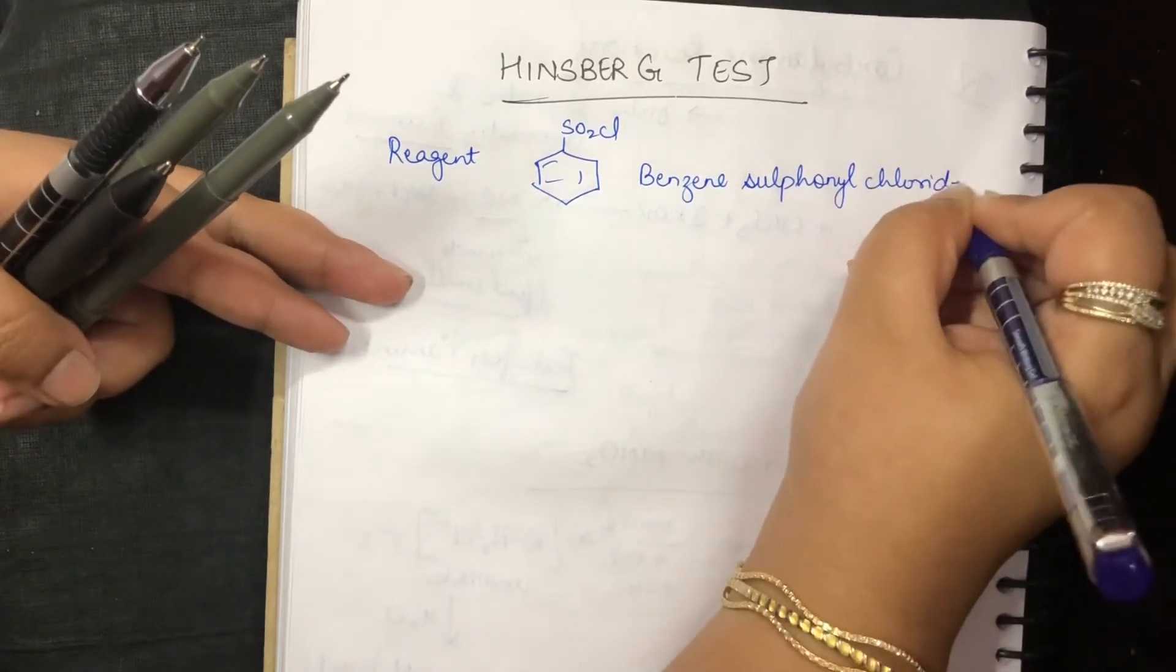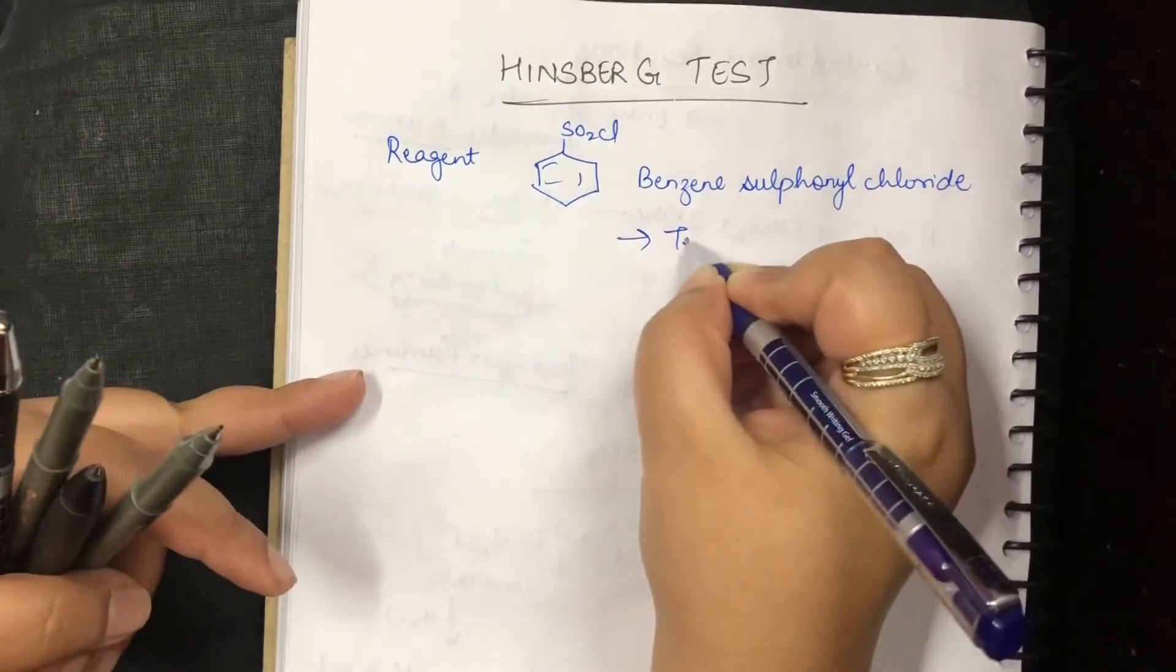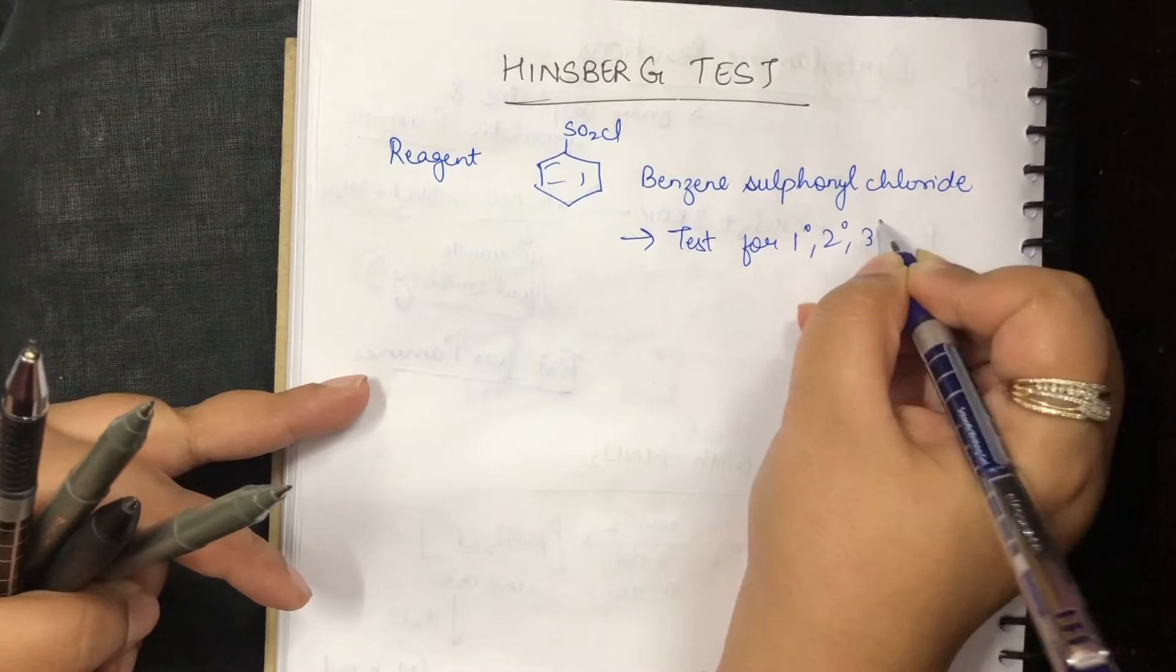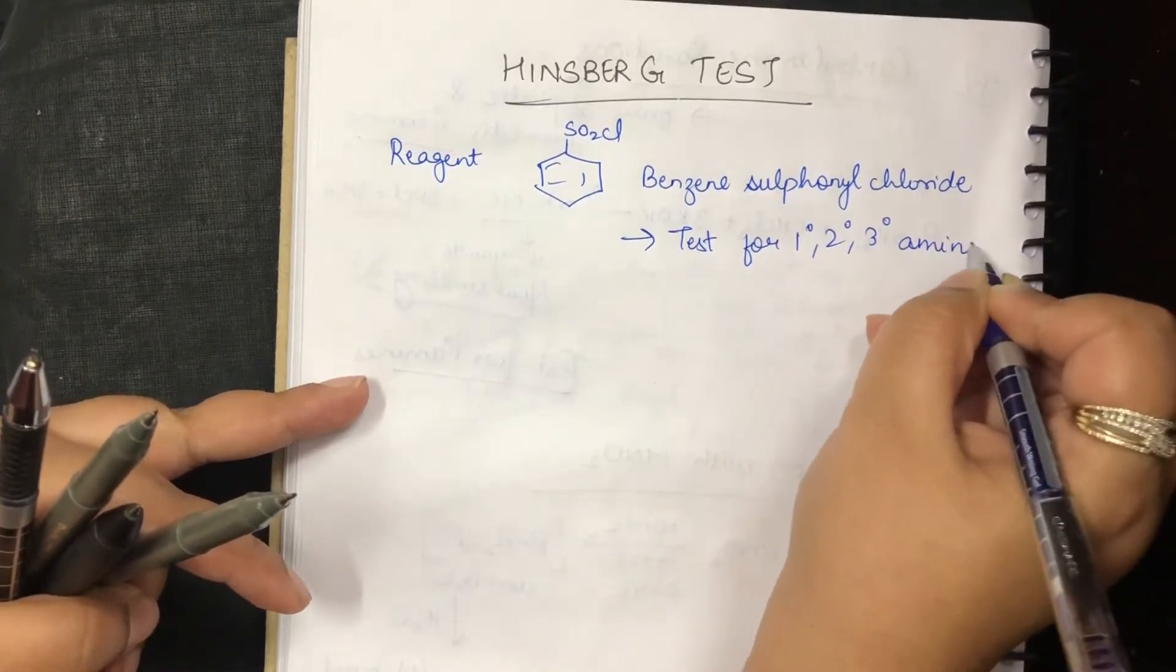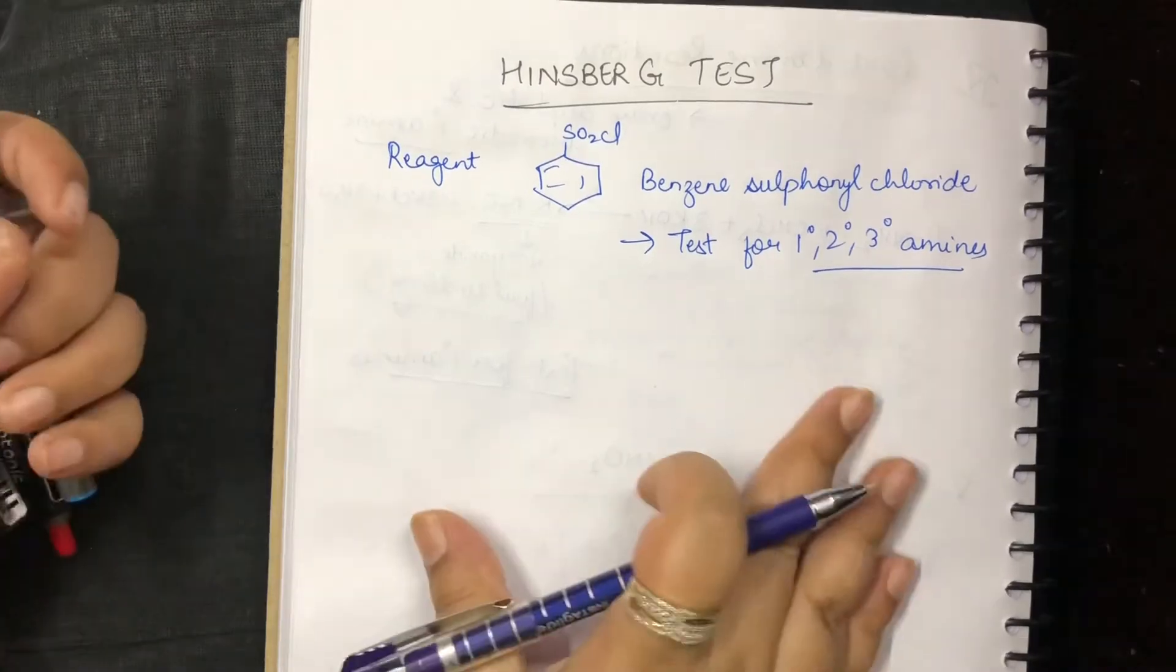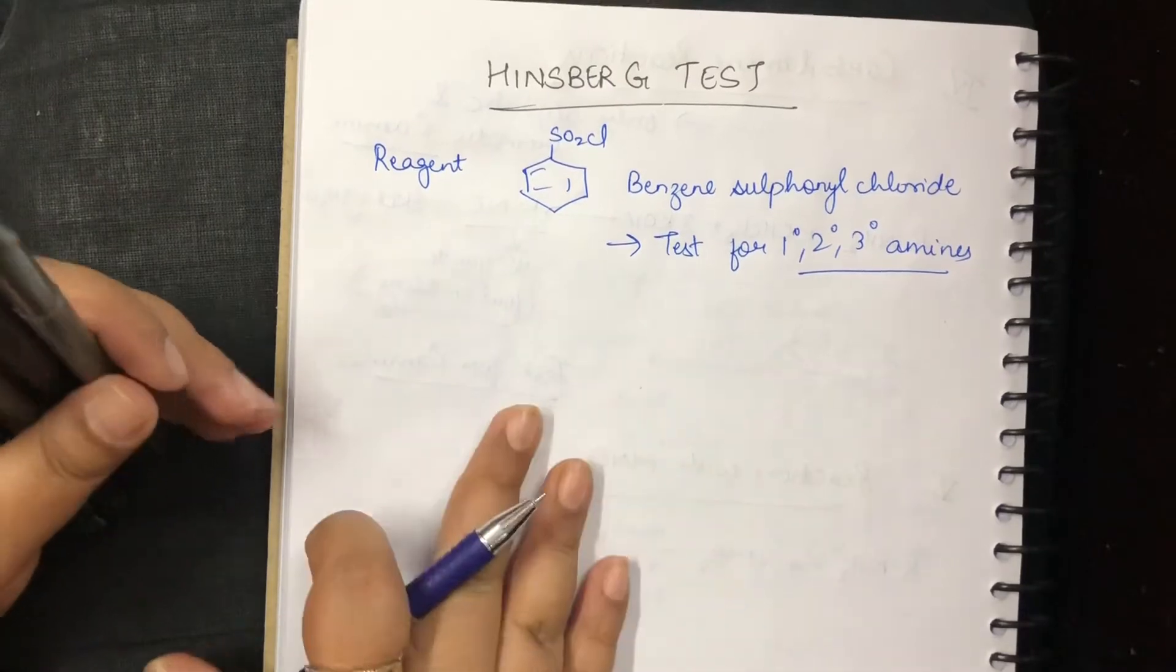The reagent for the Hinsberg test is benzene sulfonyl chloride. This reaction is important because it is a test for primary, secondary, and tertiary amines. Lucas tested primary, secondary, and tertiary alcohols. Similarly, we have a test for primary, secondary, and tertiary amines which is called the Hinsberg test.